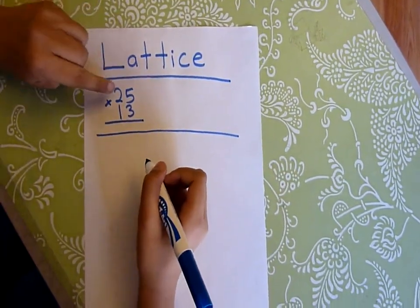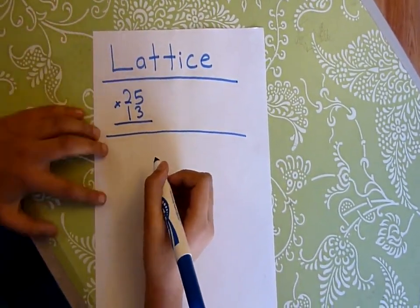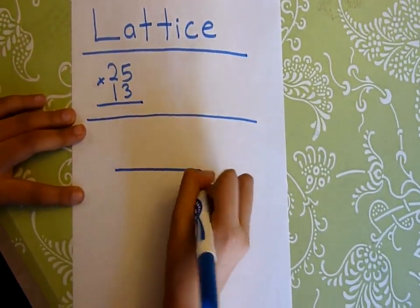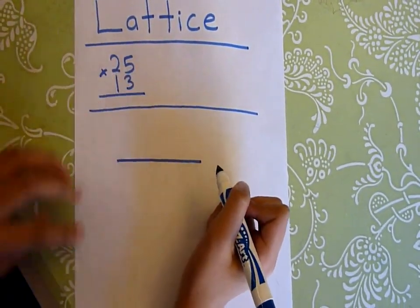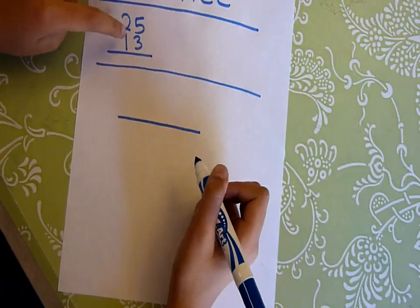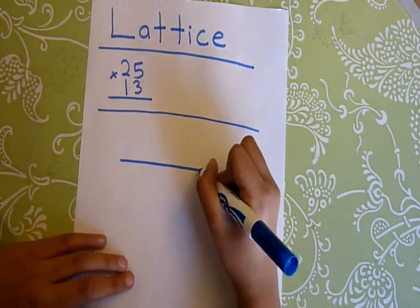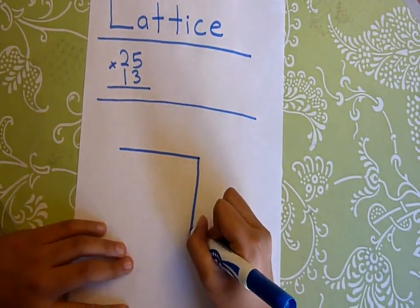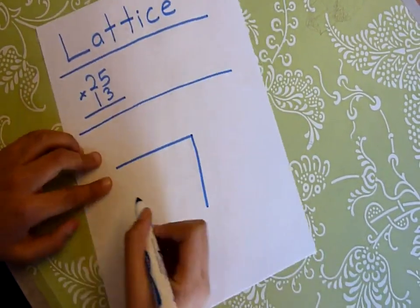First you have to see how many digits are in 25. Two, so you have to have room on the top for two digits. Then you see how many digits are in the second number, there are two, so then you have to have room for two digits on the side. And then you just do it on this side and then you connect the box.